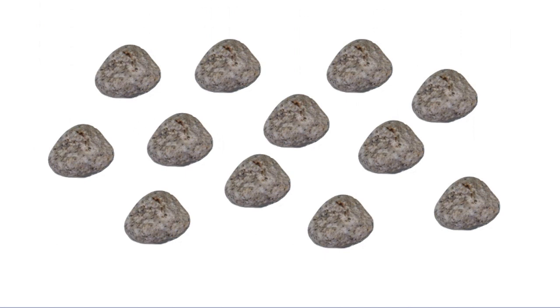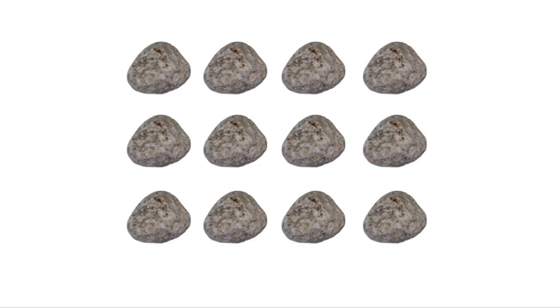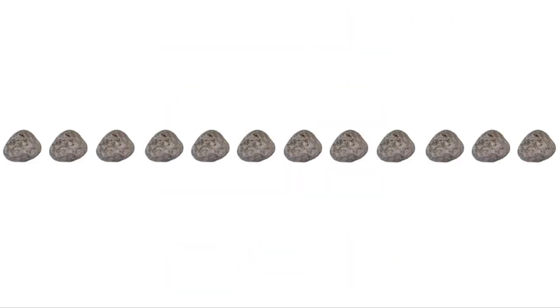Let's say that we have a group of 12 rocks or pebbles and we're asked to arrange those 12 into rectangles. We could arrange them into 2 rows of 6, 6 rows of 2, 3 rows of 4, 4 rows of 3, 1 row of 12, or 12 rows of 1.